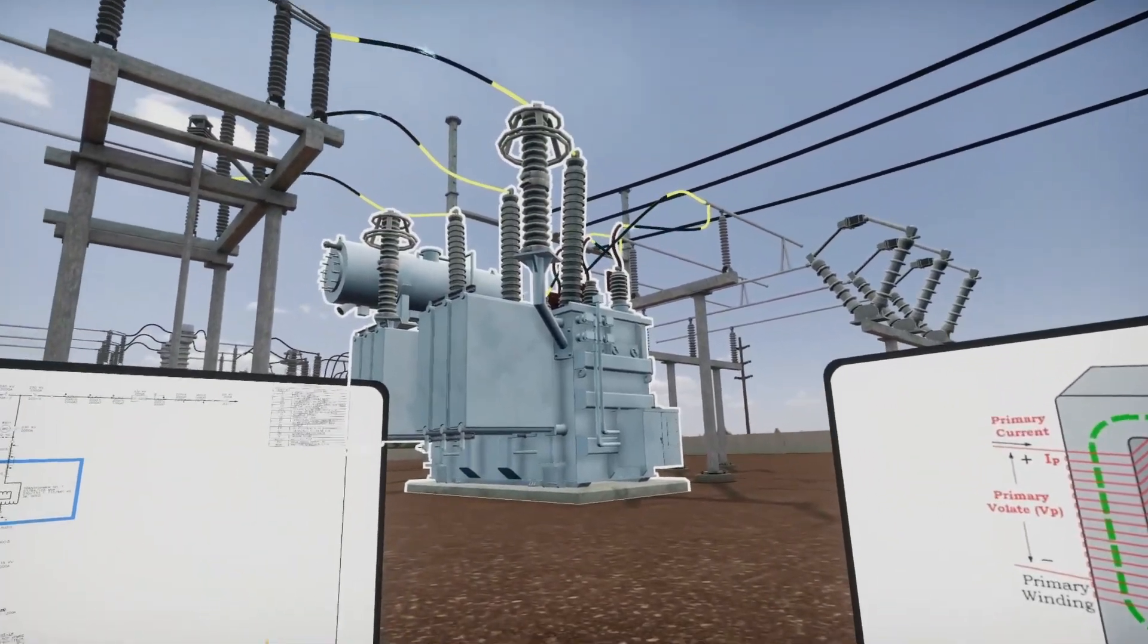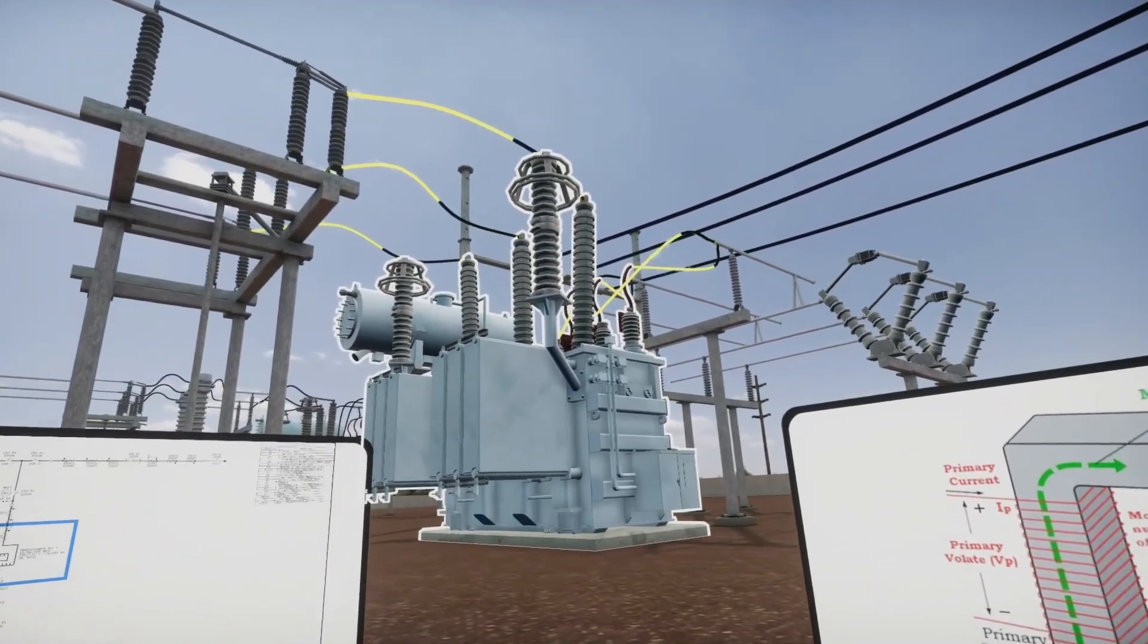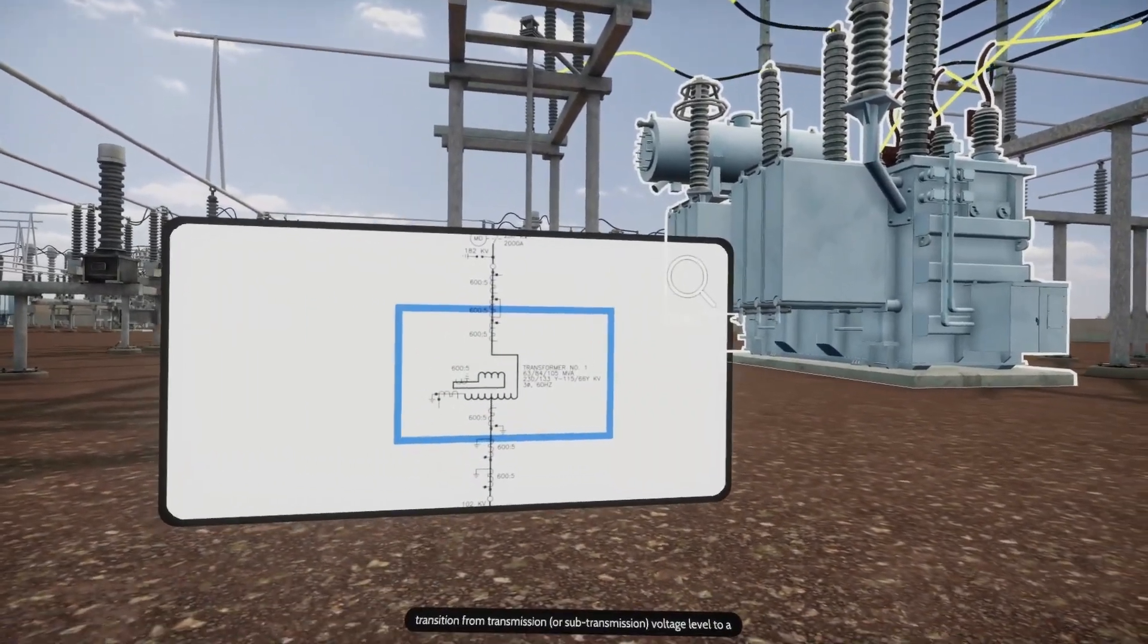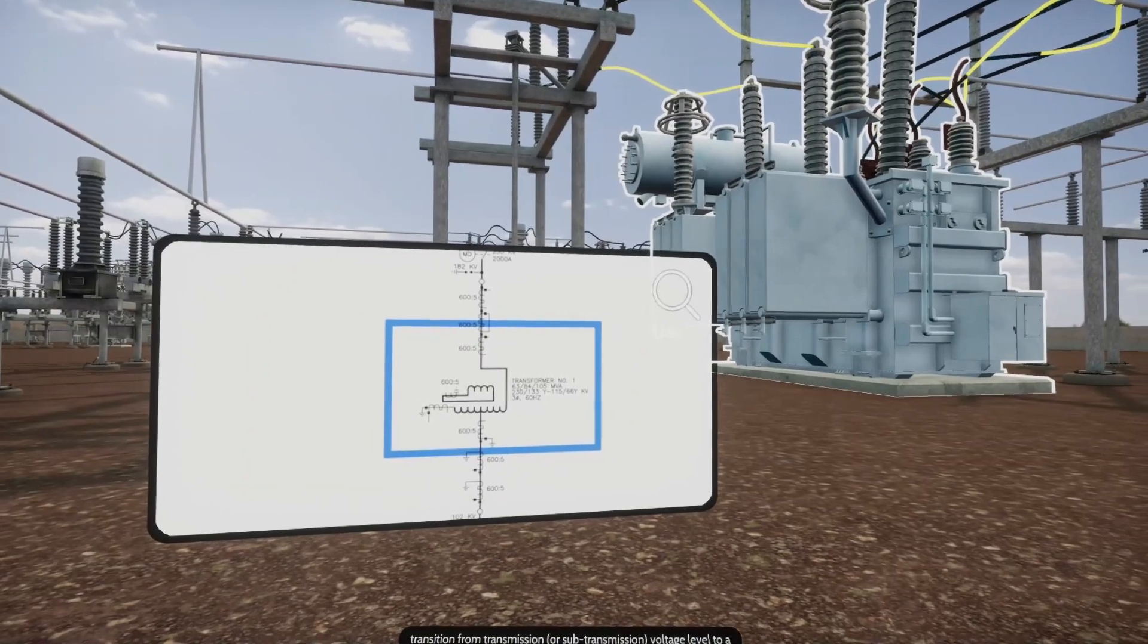The distribution power transformers perform the necessary voltage transition from transmission, or sub-transmission, voltage level to a level suitable for power distribution.